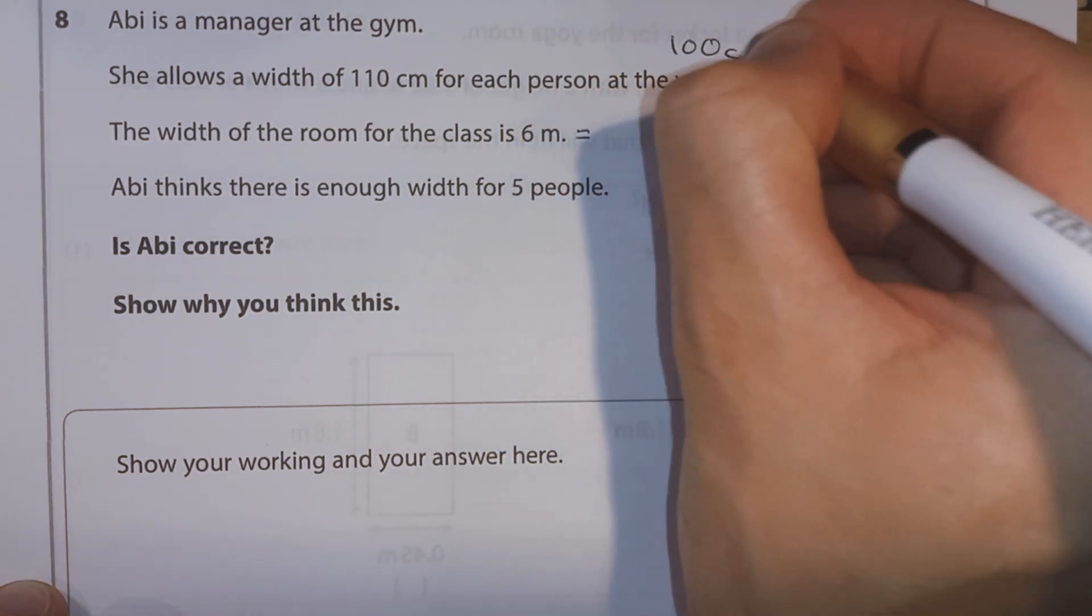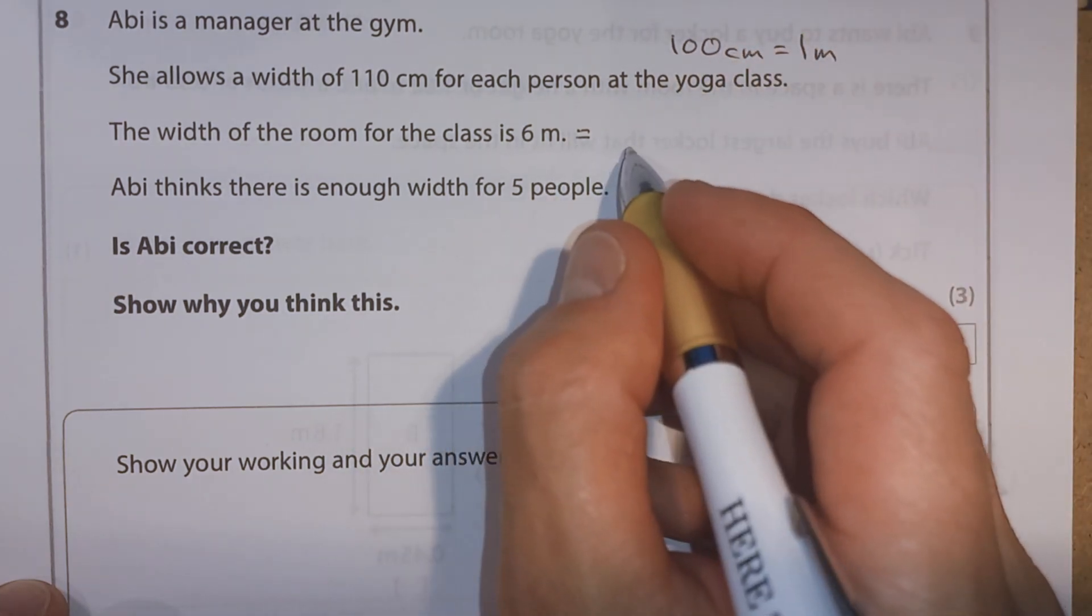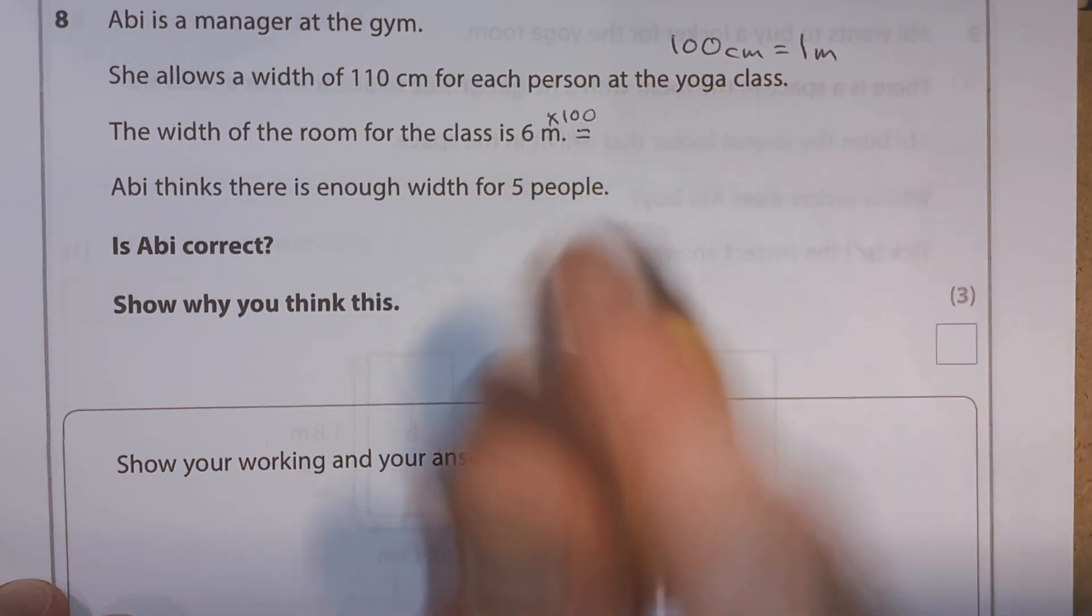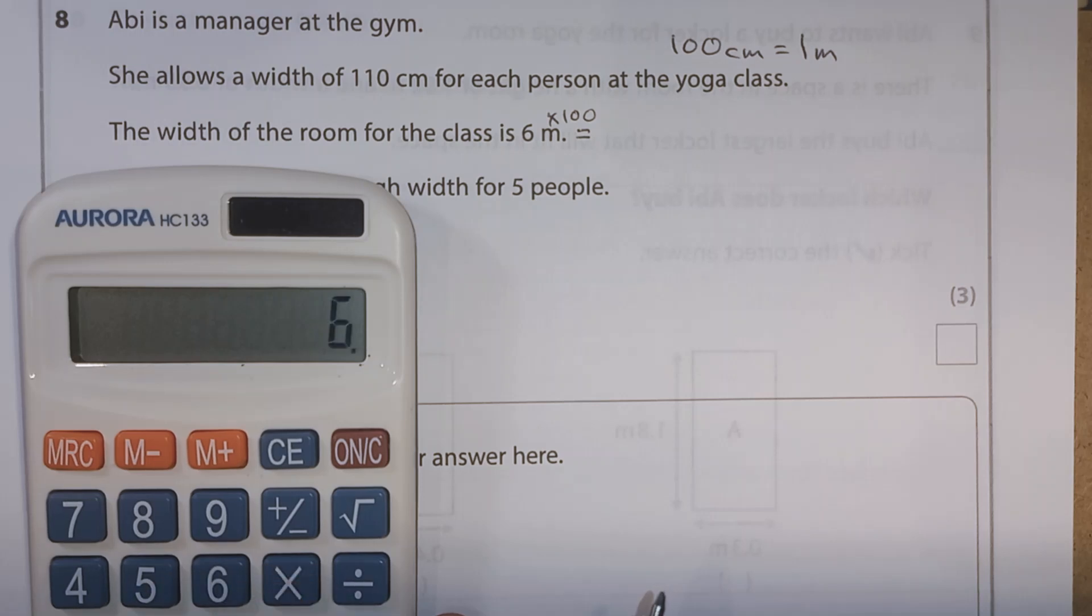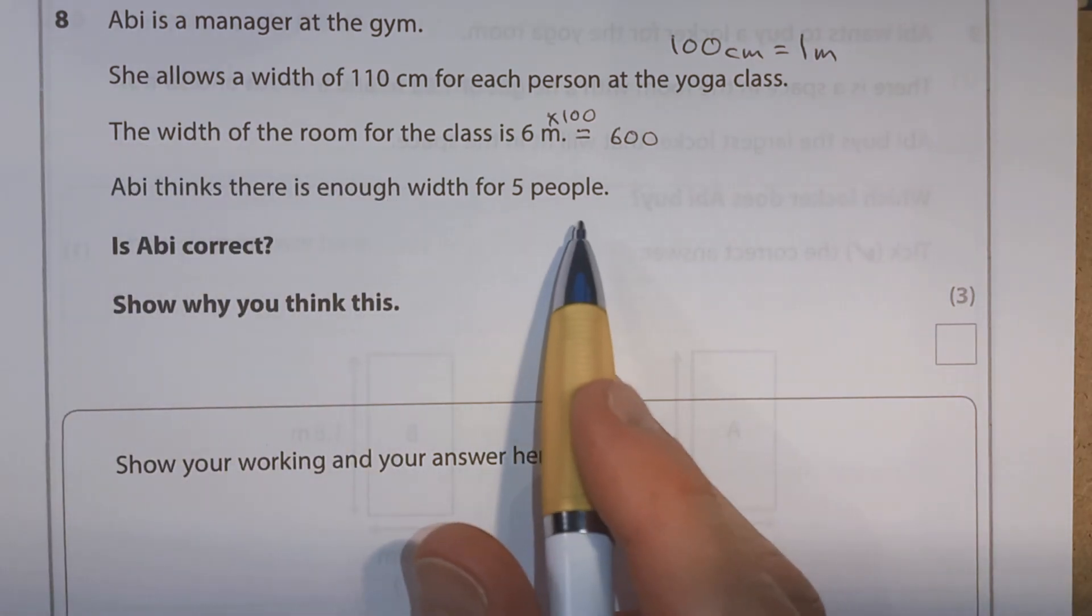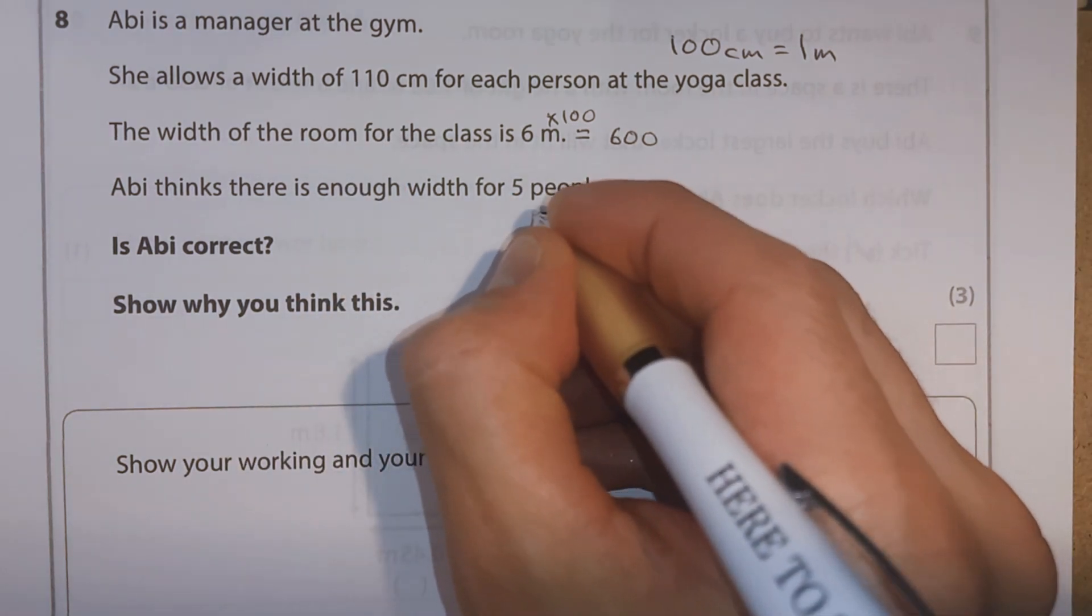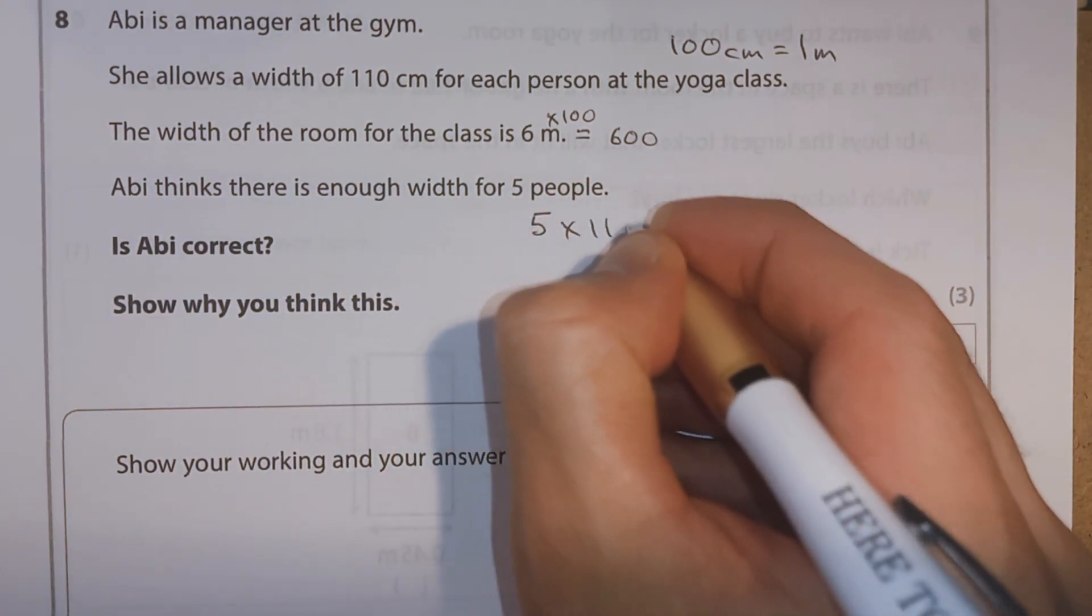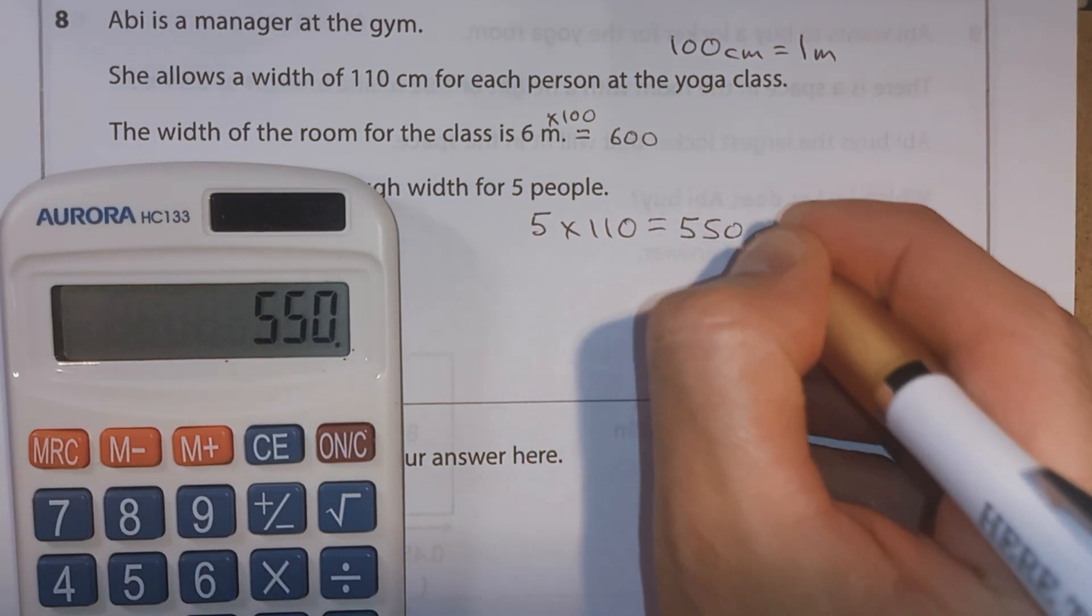Well, I know there are 100 centimetres in one metre. So if we want to turn this into centimetres, we're going to have to multiply it by 100. Because we're going to have more centimetres than metres. You might not need your calculator for this one, but we'll use it to check. 6 times 100 is 600. Abbey thinks there's enough width for five people. So she needs 110 centimetres each. Well, let's check. So let's do five lots of 110 and see what we get.